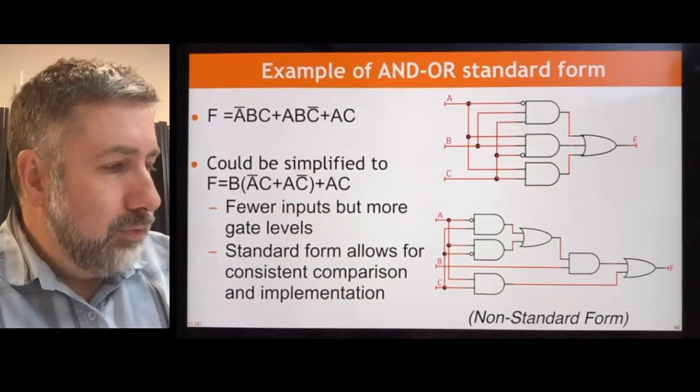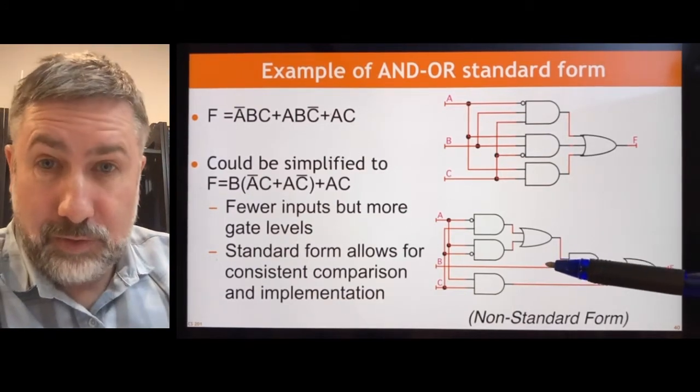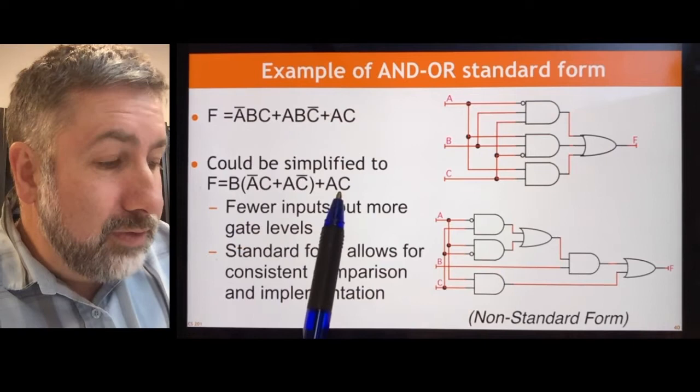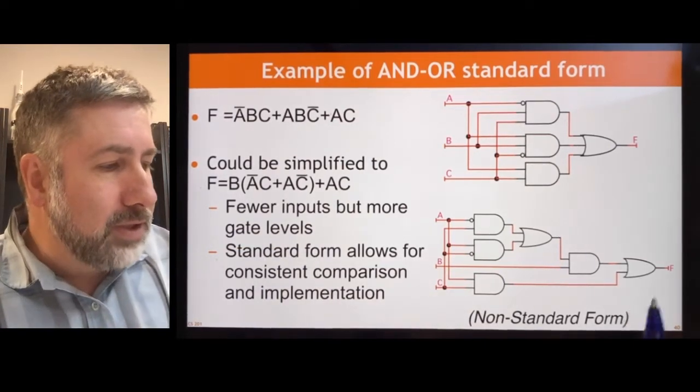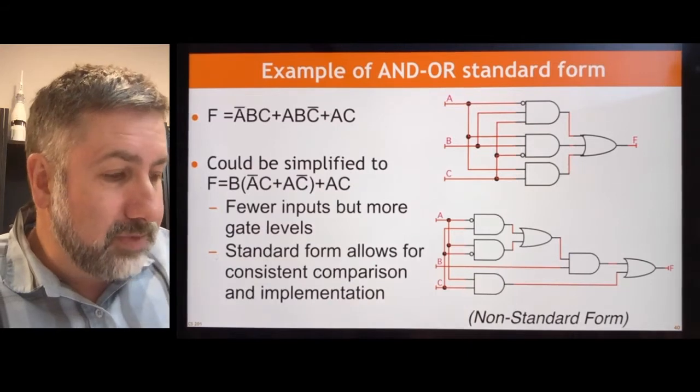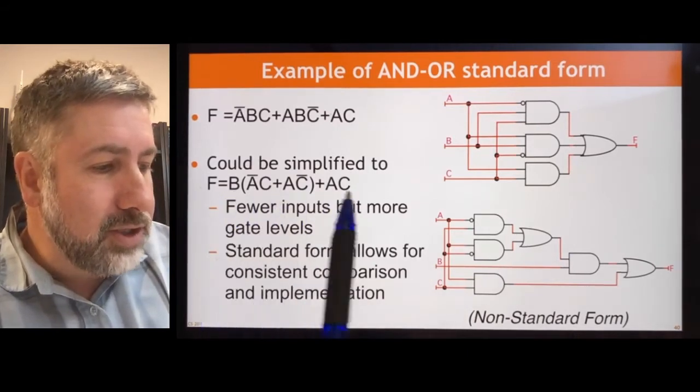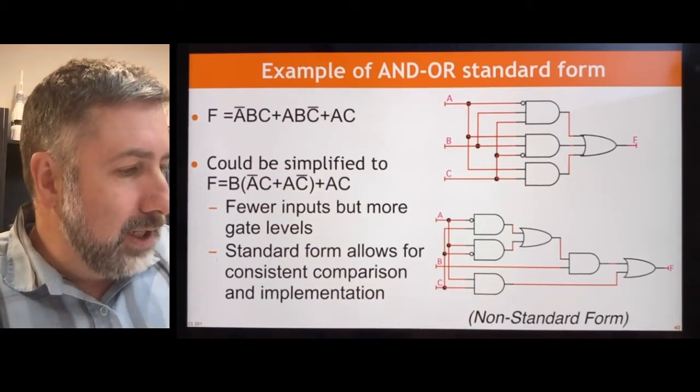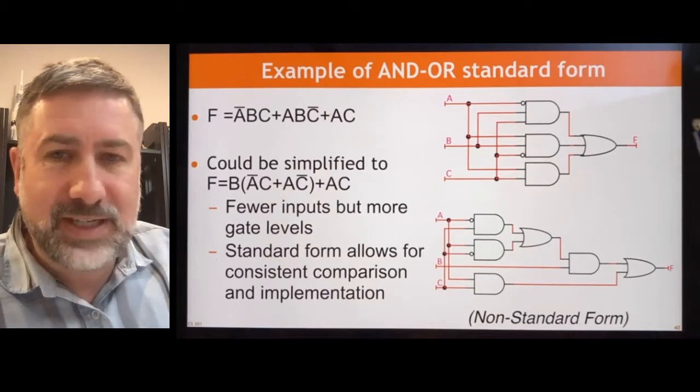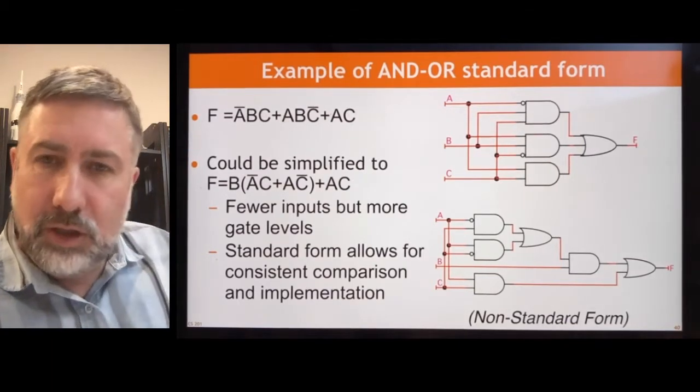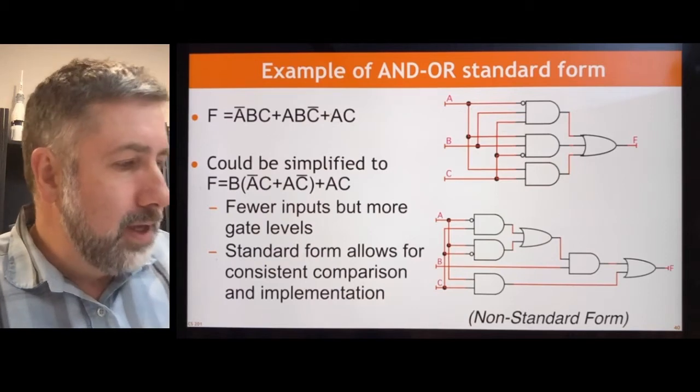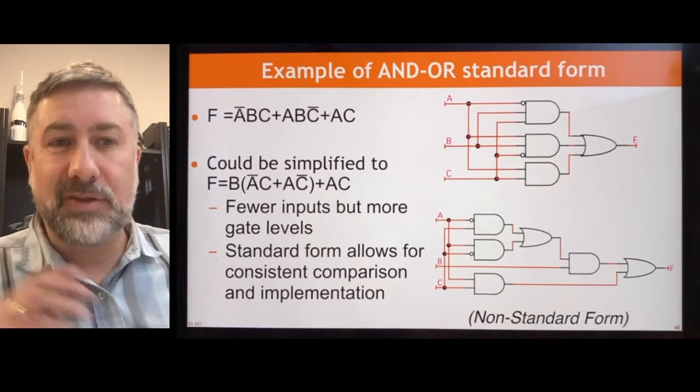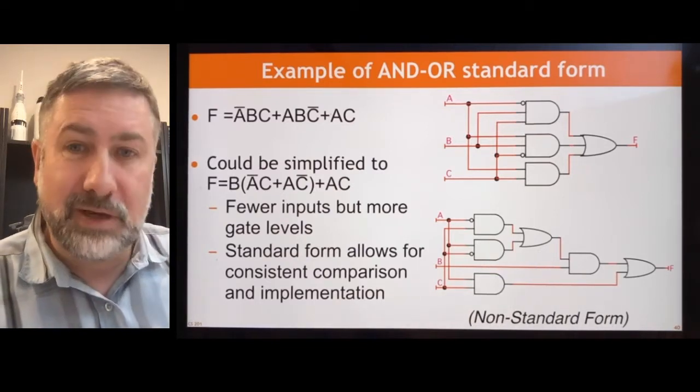This is an example of a non-standard form. You could simplify this, you could recognize that you could pull the B out of these two terms. That would reduce the number of literals and it might look a little bit simpler. But what you can see is that even though that would give you some simplification in the logic function, it actually adds to a number of additional layers when you actually put it into the logic. And so this is why we look at these standard forms, because they give us a standardized implementation that we know is going to take at most two gates to process. The non-standard forms, if I'm asking you to simplify for something other than gate levels or something other than the standard form, then this kind of a simplification might be useful.